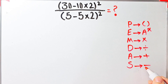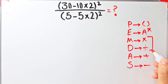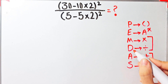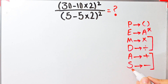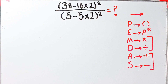Multiplication and division have the same level of priority. Also, addition and subtraction have the same level of priority. When we have both in an expression, we start from the left and simplify. Let's solve this question step by step together.